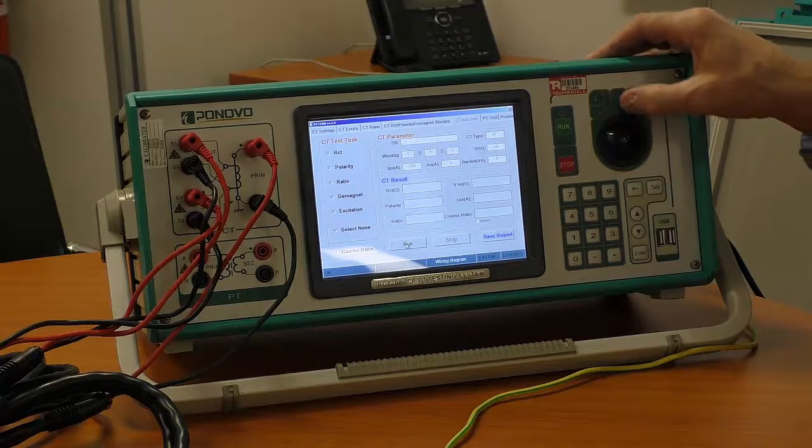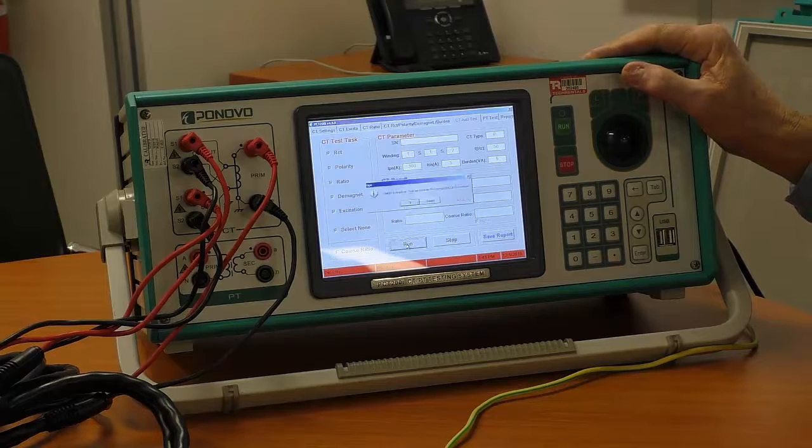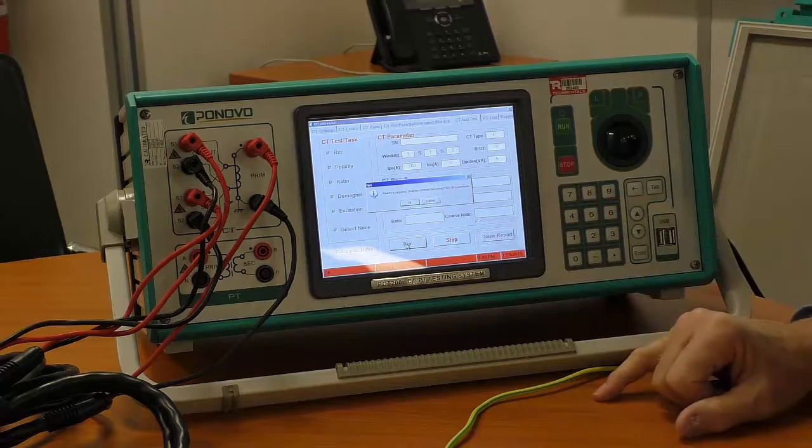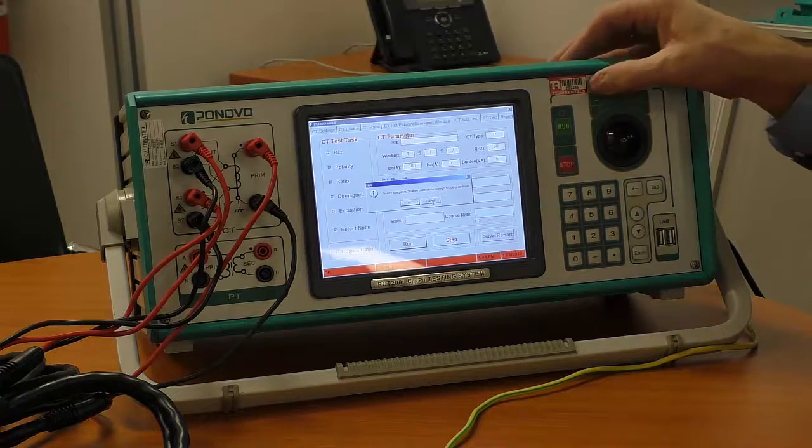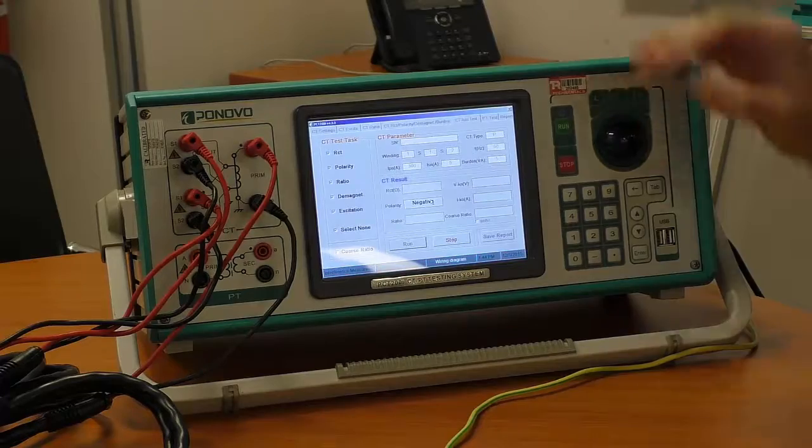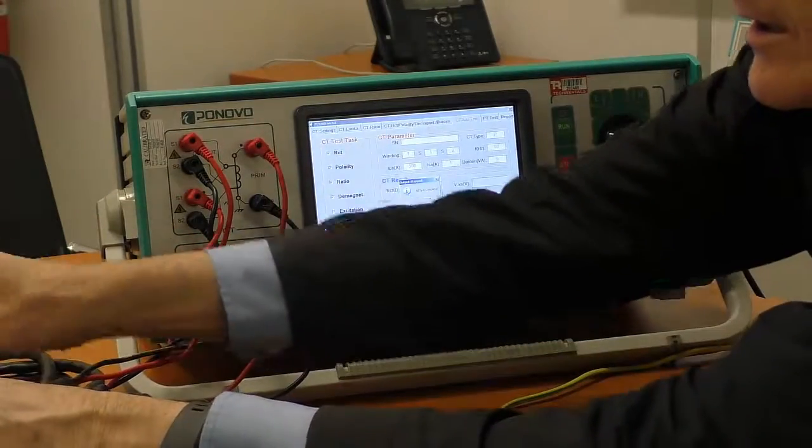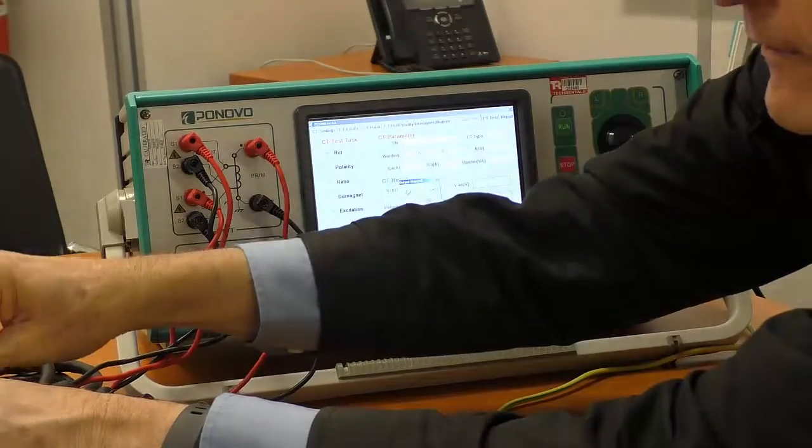Easiest way to start, I'll push the run button. Now, if I happen to have it wired up back to front, it'll tell me. Right, polarity is negative. Shall we continue the testing? No, at the moment I'll cancel and reverse the wiring.